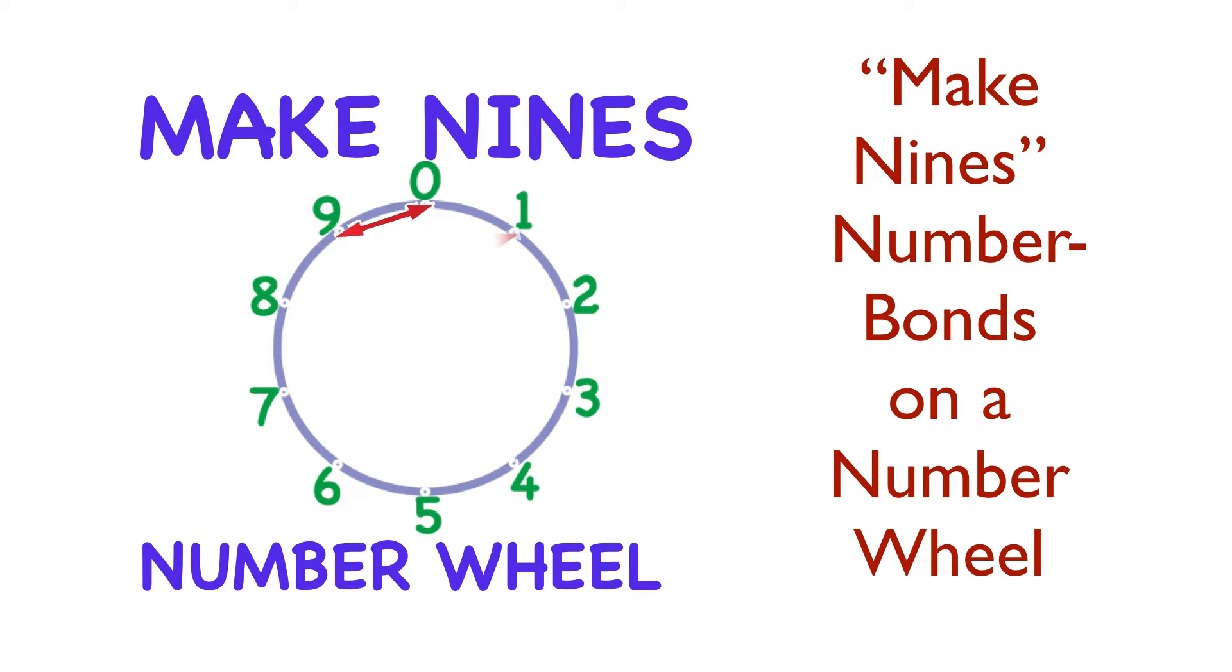And 8 is 1 away from 9, and look at that. They're parallel, like railroad tracks. And 7 is 2 away from 9, and 6 is 3 away from 9. Oh, look at that pattern. And 5 is 4 away from 9.